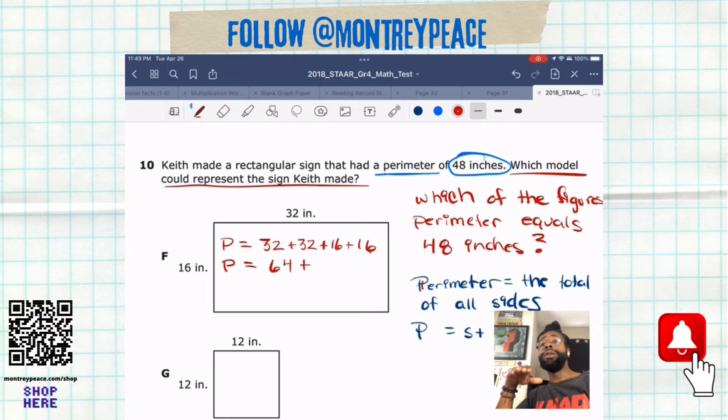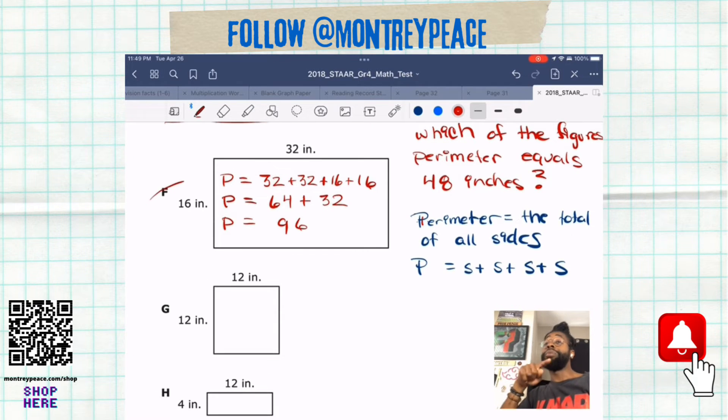32 plus 16, 32, 16, 16. 32 and 32 together is 64, 16 and 16 together are 32, then you put those together and you get 96. So the perimeter is 96. The reason I have two 32s, you need one for the top, one for the bottom, 16 one for the left, one for the right.